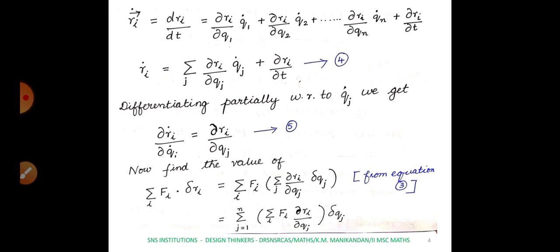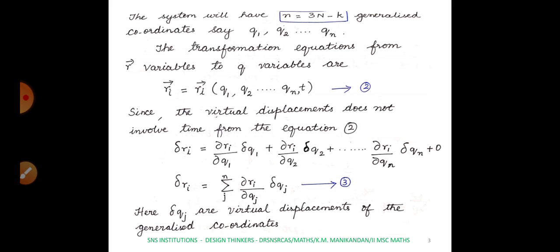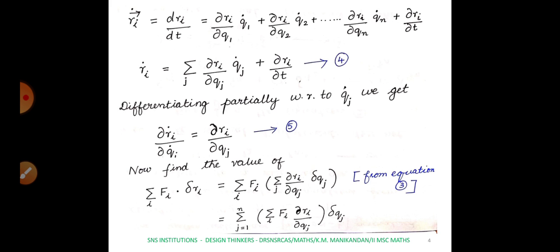Now we find summation i of fi·delta-ri. We replace delta-ri from equation 3 as summation j (∂ri/∂qj) delta-qj. Taking summation j outside, we get summation j from 1 to n of [summation i of fi·(∂ri/∂qj)] delta-qj.